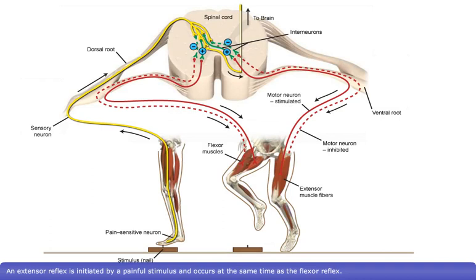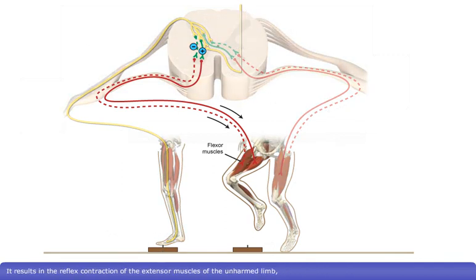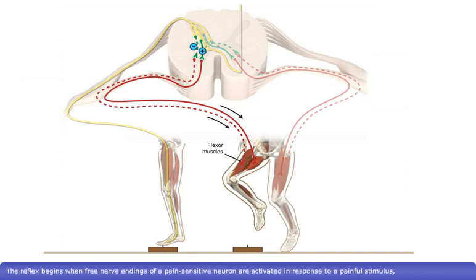An extensor reflex is initiated by a painful stimulus and occurs at the same time as the flexor reflex. It results in the reflex contraction of the extensor muscles of the unharmed limb, allowing the body to retain its balance while the flexor reflex withdraws the harmed limb away from the stimulus.